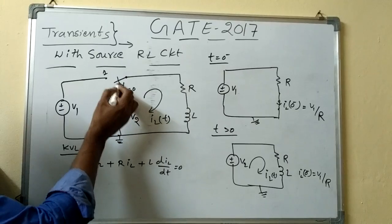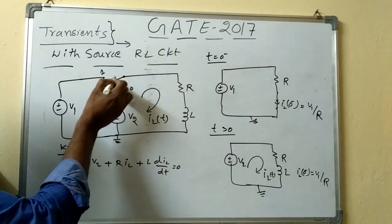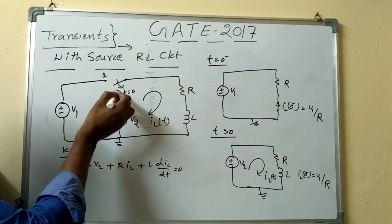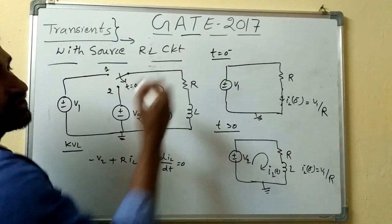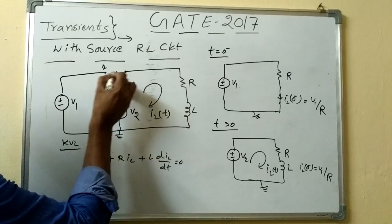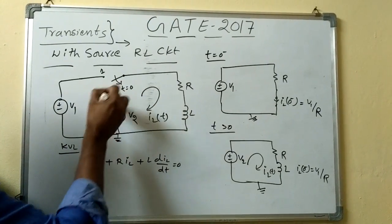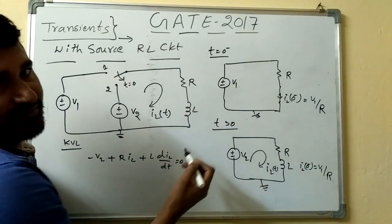Now, the circuit is like this. So when t less than 0, the switch was position 1 and t equal to 0, it is moving to position 2. Now, always t equal to 0 minus what is the circuit. So, whenever this switch is like this, v2 will be not connected, so simple, the circuit is become like this.